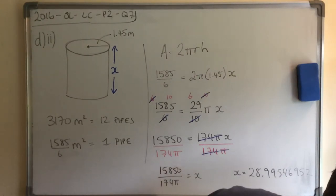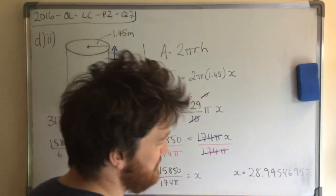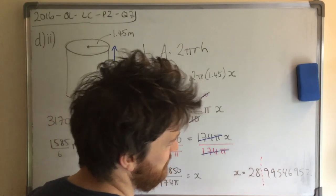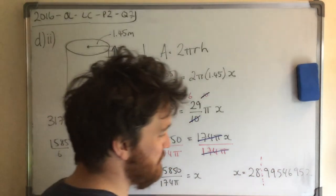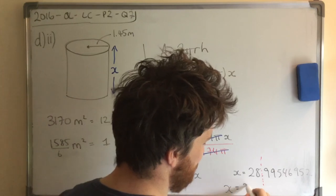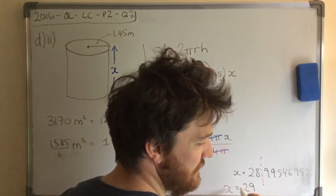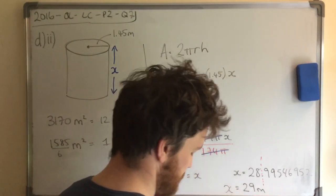So, then it said, give it to the nearest meter. So let's see there. Does the nine round up the eight? It certainly does. So the nearest meter would be 29. And we're talking about length, so it's 29 meters.